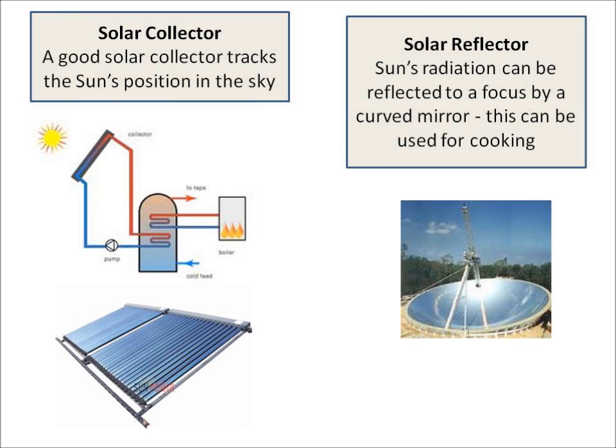Lastly, you need to know about solar collectors and solar reflectors. A solar collector is anything that can move or rotate to follow the sun's position and collect as much sunlight as possible. A solar reflector can be used to collect the sun's radiation and reflect it to a focal point using a curved mirror. This can be used for cooking.